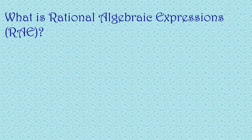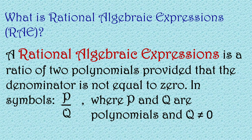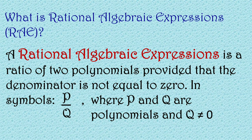So what is a rational algebraic expression or RAE? A rational algebraic expression is a ratio of two polynomials, provided that the denominator is not equal to zero. In symbol, P over Q, where P and Q are polynomials and Q is not equal to zero. Meron tayong na-encounter na word dito which is polynomials, so i-define natin what is a polynomial.